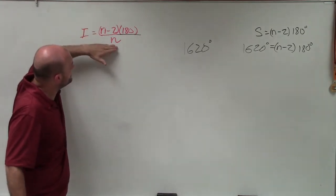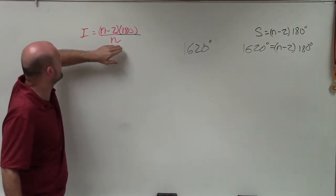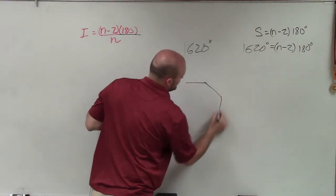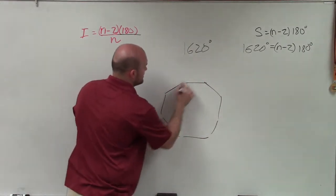And then all I do is I divide it by the number of sides, which is going to give me the measure of one interior angle. So one, two, three. Let's pretend here's my angle.